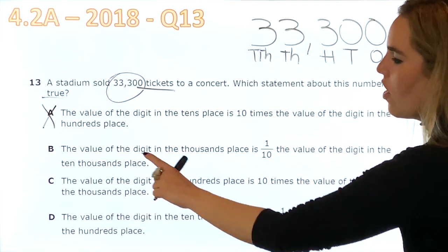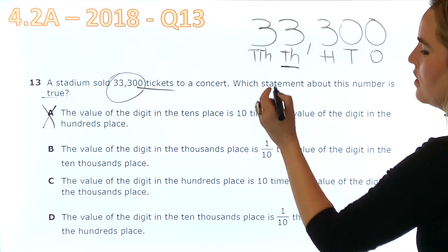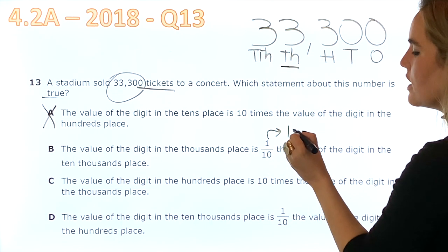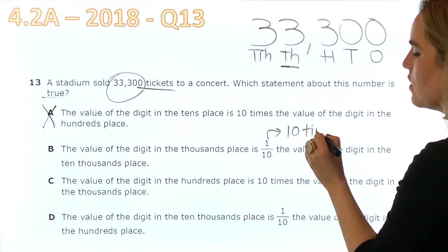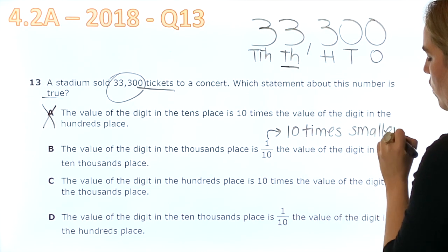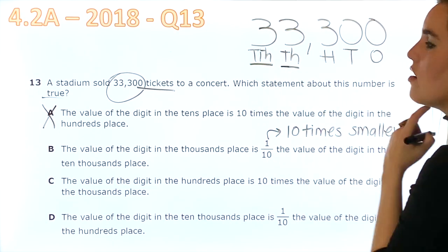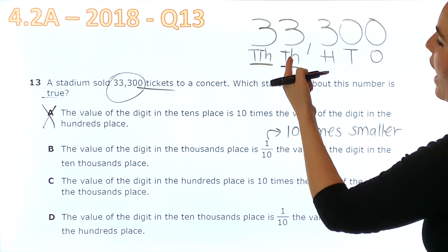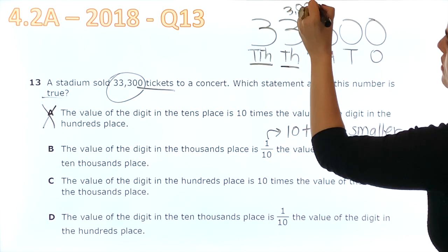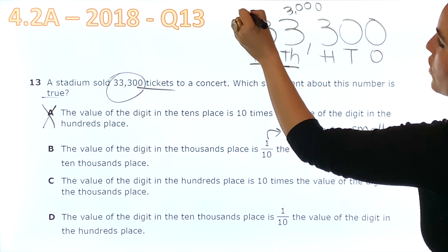Let's see B. The value of the digit in the thousands place, this one, is one-tenth. One-tenth means ten times smaller. The value of the digit in the tens place. Okay, well, I know that this three is 3,000 and this three is 30,000.